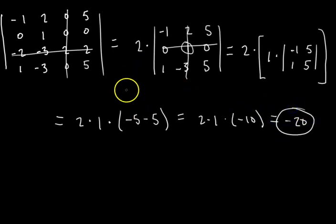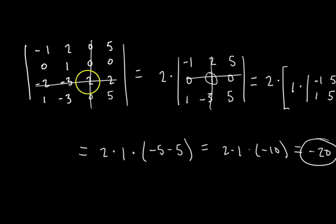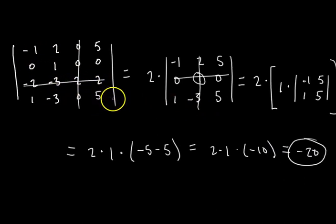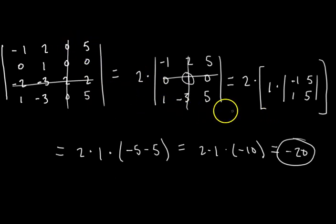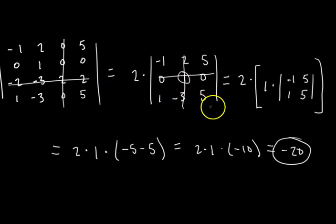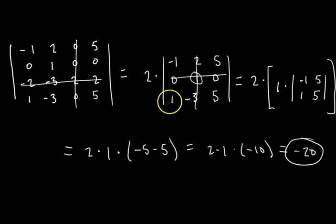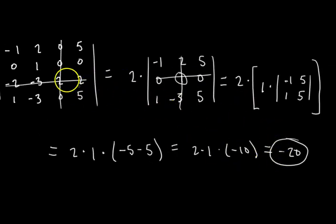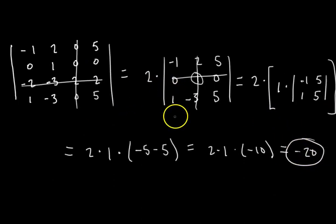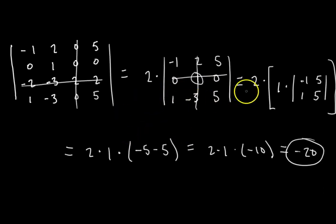That wasn't so bad. You look at the 4x4 and feel intimidated, but it really just boils down to cofactor expansion, which is very easy because of all the zeros. That's the benefit of cofactor expansion — it's very simple when rows or columns have a lot of zeros. So the determinant of this 4x4 matrix is negative 20. I hope that helps and you're not intimidated by those crazy-looking formulas. I'll see you in the next video where we talk about finding the determinant using row reduction.